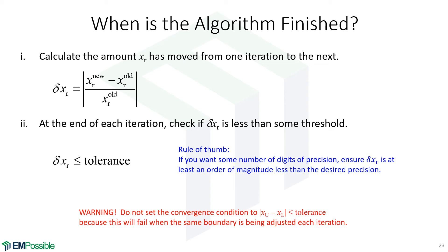Here's a warning and an easy error to make: never check the tolerance just by the distance between the bounds. For certain shaped functions, we're only ever moving one of the bounds, and that bound closes in exactly on the root while the other bound could remain very far away and never move. If we're just looking at the distance between the bounds, the algorithm will have converged but our code won't recognize that correctly. So don't make that mistake.